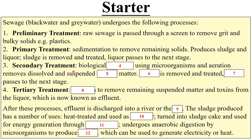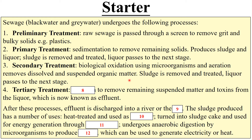Secondary treatment — this is biological oxidation using microorganisms and aeration, which removes dissolved and suspended organic matter. The microorganisms are using it for energy — they're feeding off it, so it's living matter. Sludge is removed and treated; liquor passes to the next stage. For tertiary treatment: filtration to remove remaining suspended matter and toxins from the liquor, and it's now known as effluent.